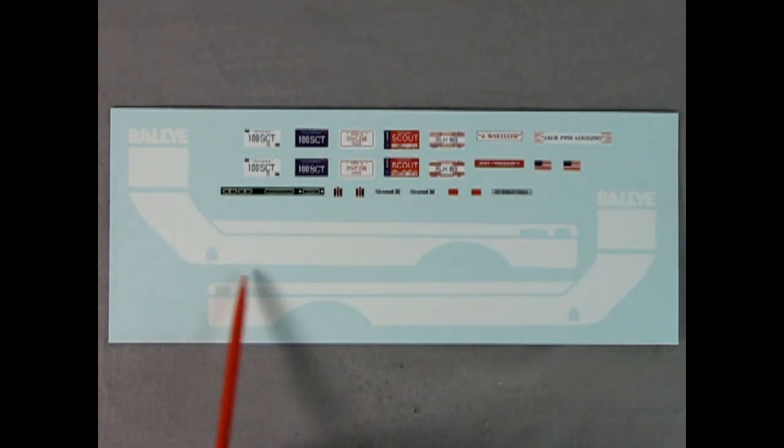And then here we have our stripes. They also have cutouts here for the side marker lights as well as the International Harvester logo. You can scrape these off of the model and use the decals if you wish but overall that is our decal sheet.